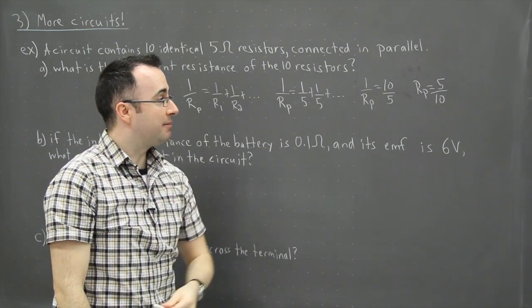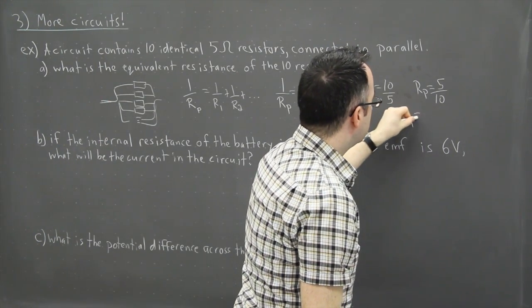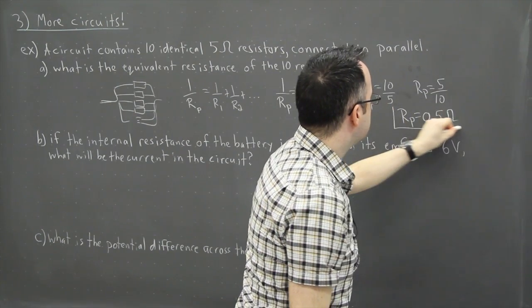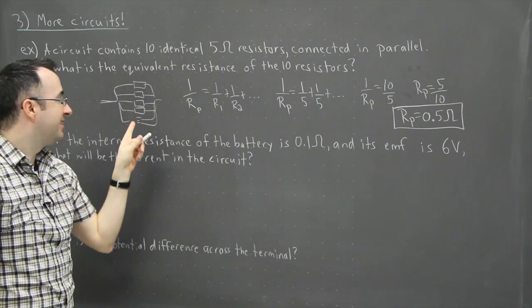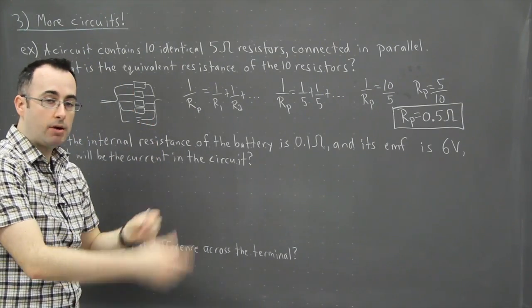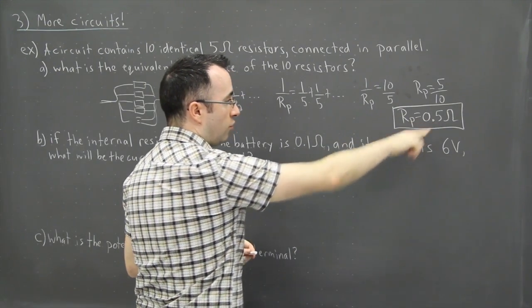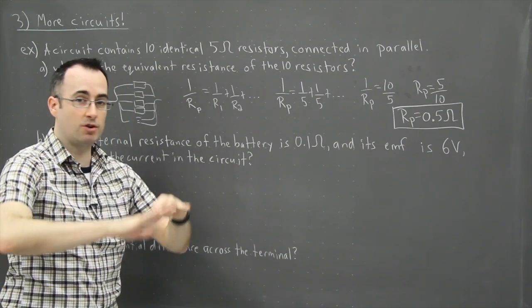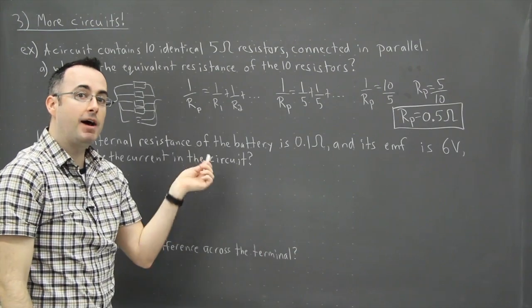So the very last step then is to figure out, well what's 5 over 10, that's 0.5. So then I can state, this is my equivalent resistance. So I could redraw, instead of having these 10 horrible resistors all connected in parallel, I can redraw the circuit with just one single 0.5 ohm resistor. And that's going to do the same thing. So as far as a circuit's concerned, it's like there's just that one sitting there instead of 10 five ohm resistors.